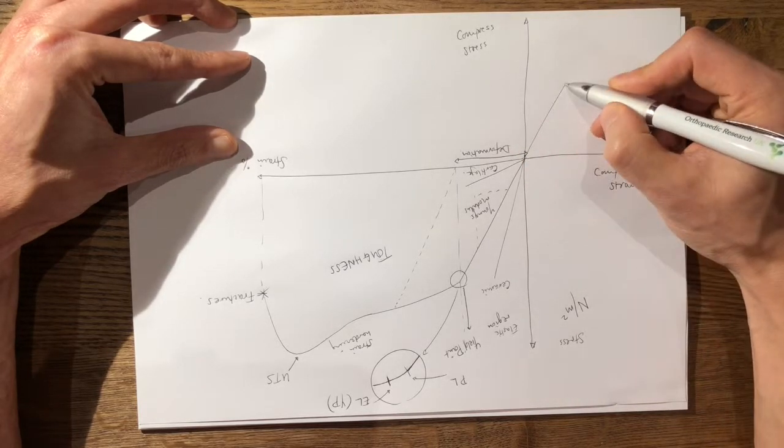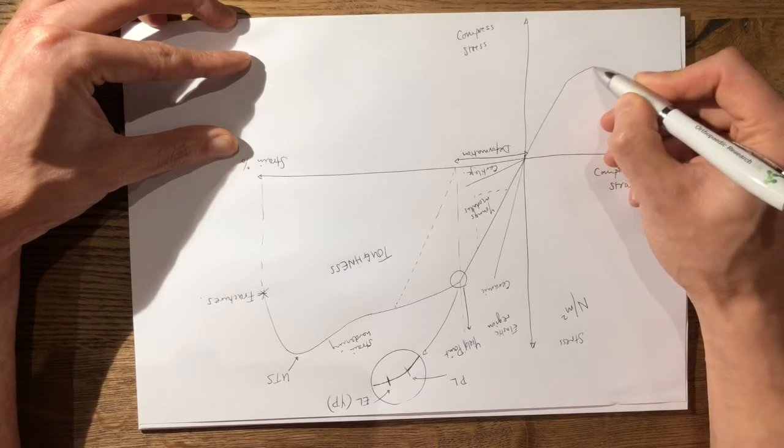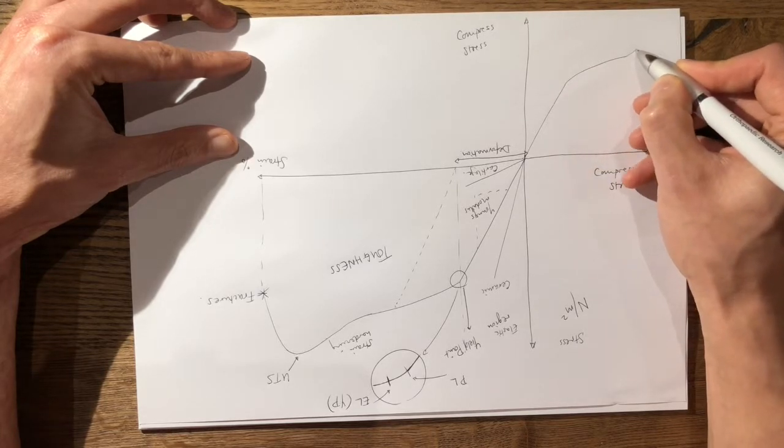You have a linear region. It then undergoes a yield point. You have a plastic region, strain hardening, ultimate tensile strength and then it undergoes necking and then failure.